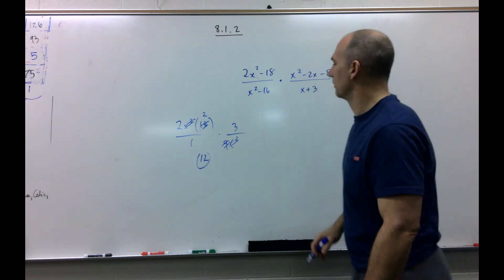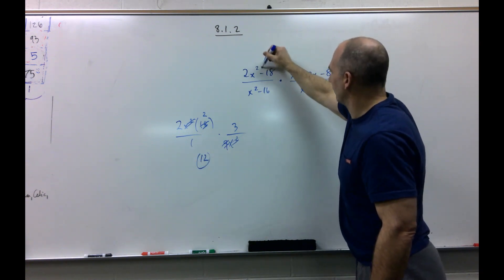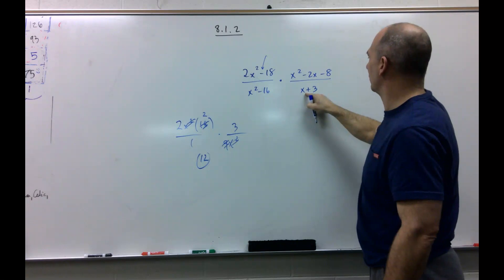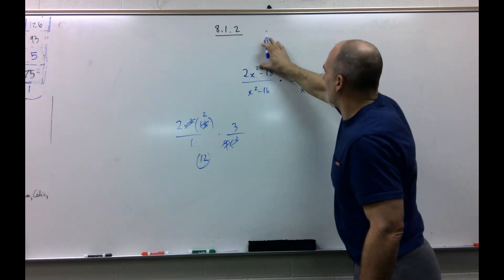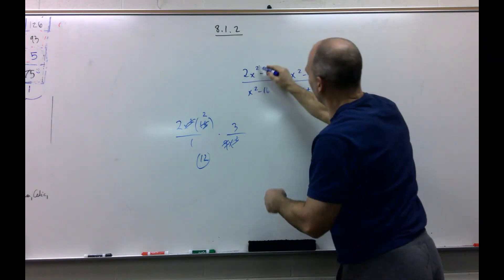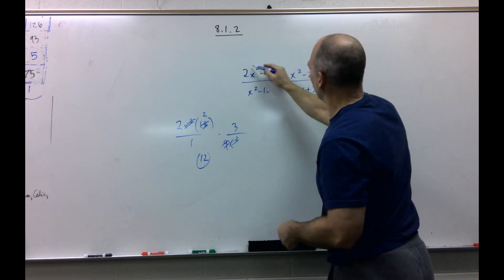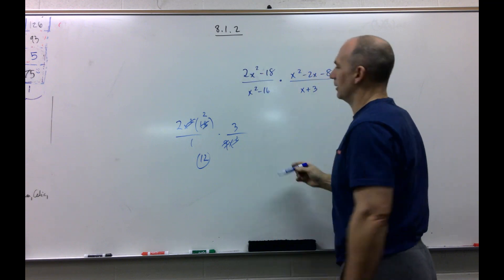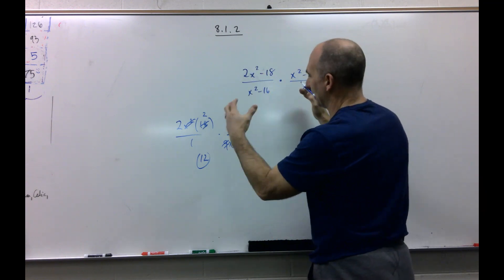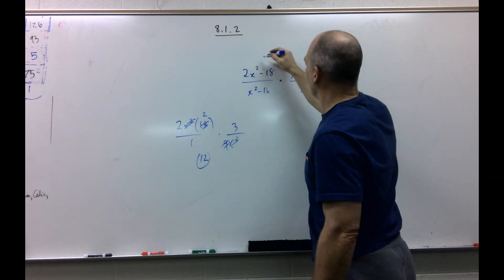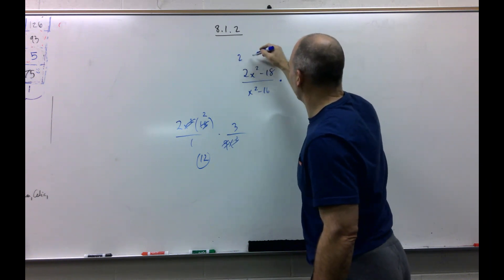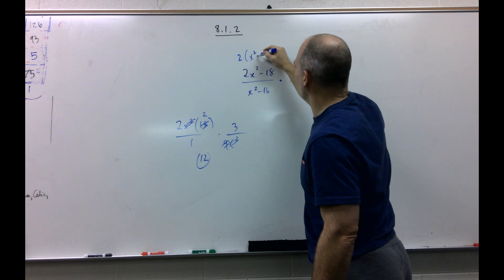Now notice, this is connected by subtraction, subtraction, addition. So we cannot just start canceling x squareds and canceling 2 into 16 because you have to factor it first. So what that means is we're going to take a 2 out of this. We'll be left with x squared minus 9.